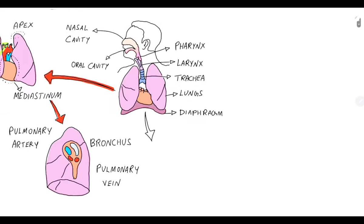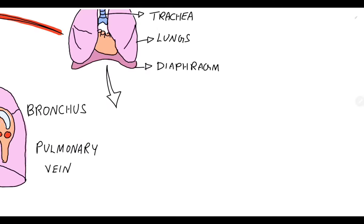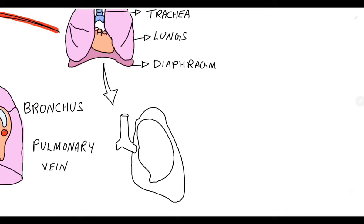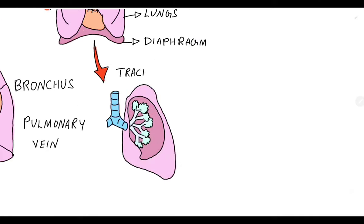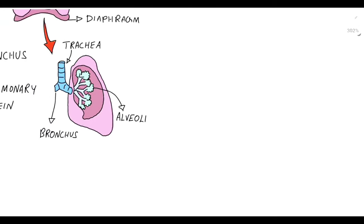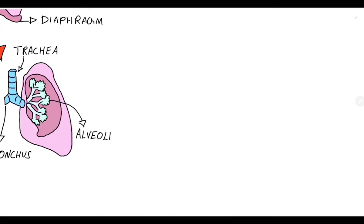Now let us take a closer look at the structures present inside the lungs. The trachea is continuous with the bronchus, which divides into smaller bronchi and bronchioles, which are then connected to the alveoli.